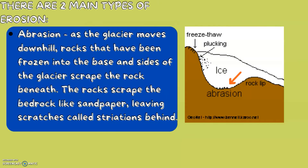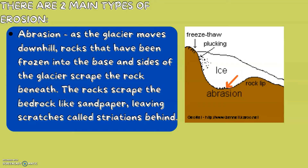There are two main types of erosion, the first being abrasion. This is as the glacier moves downhill — the rocks that have been frozen into the base and sides of the glacier scrape against the rock beneath. Because the rocks are scraping against the bedrock, which is the rock already on the ground, like sandpaper, it leaves scratches called striations in the land below.